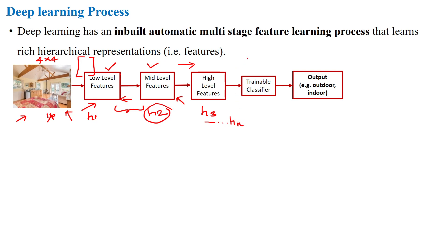Here we have used three hidden layers. The extracted information is then given to a classifier in the last layer. A trainable classifier in the network classifies the information extracted up through hidden layer 3, classifying the given images as either outdoor or indoor, for example.